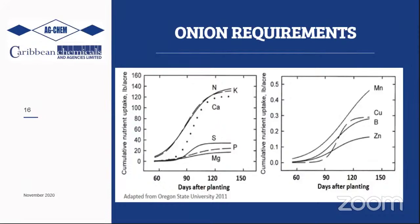A nutrient requirement graph shows that nitrogen, potassium, and calcium are needed in the greatest amounts — cumulative nitrogen and potassium averaging around 140 pounds per acre, calcium slightly lower at about 120 pounds. Micronutrients such as manganese, copper, boron, and zinc are also needed. Sulfur contributes to onion flavor and pungency but is not needed in high amounts — about 60 pounds per acre is sufficient.